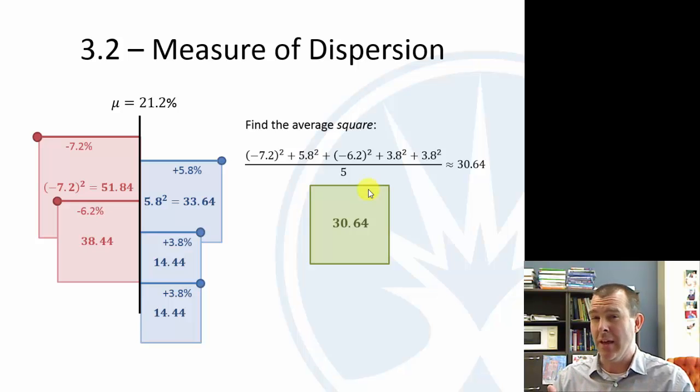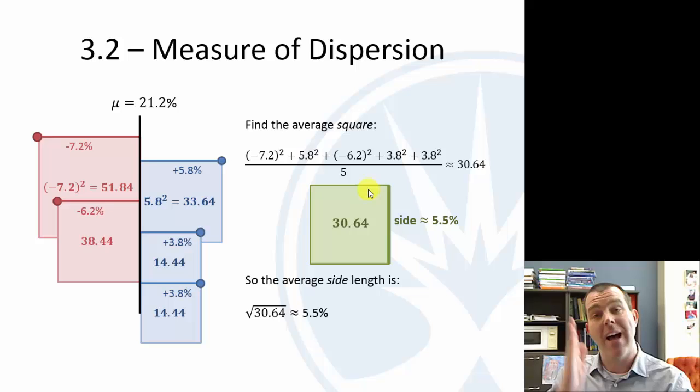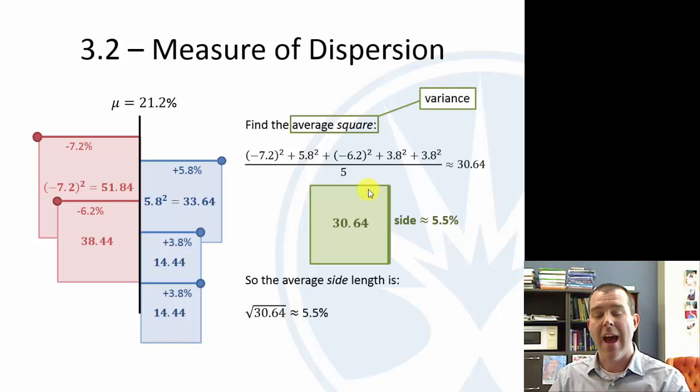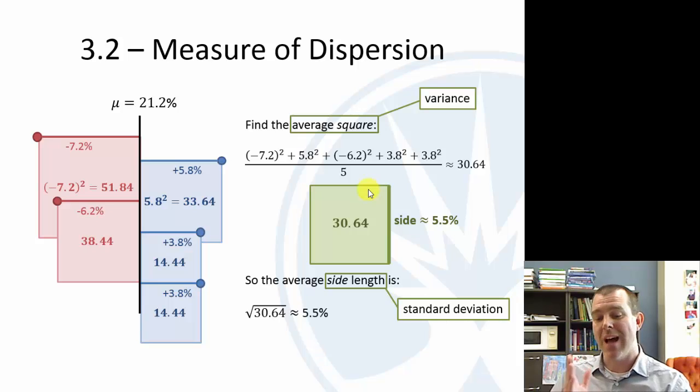That doesn't really mean anything. What does an average square mean here? So what would be better then would be to look at just the side. Because that's where these 5.8, 7.2, 6.2, those were the average sides. And so what we can do is just take the square root of that. And you get about 5.5. So what these are, these are new statistics. So the average square is called the variance. And the average side length is called the standard deviation. And they're based on this idea here of the squares.